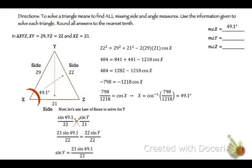So you get sin Y equals 21 sin 49.1 over 22. Anytime you find an angle, you use the inverse. So Y equals sin inverse of 21 sin 49.1 divided by 22, which is 46.2.